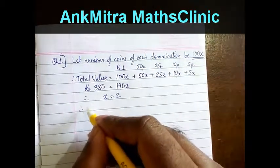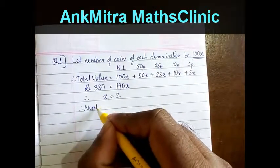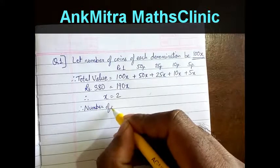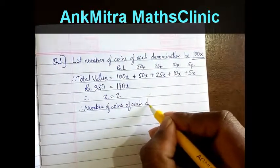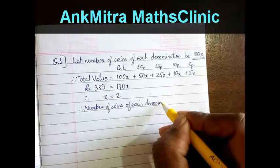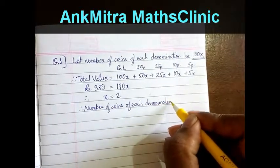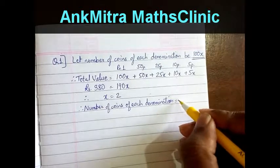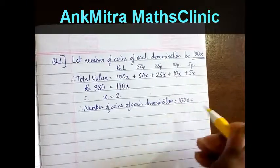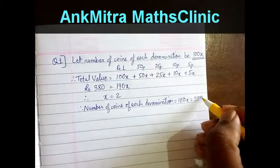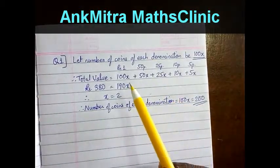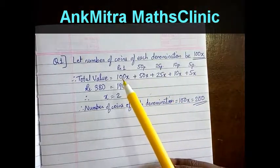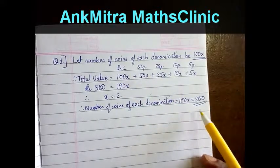So therefore number of coins of each denomination is equal to 100x which is equal to 200. So we have 200 coins of each denomination, that means the value of 1 rupee coins will also be 200.